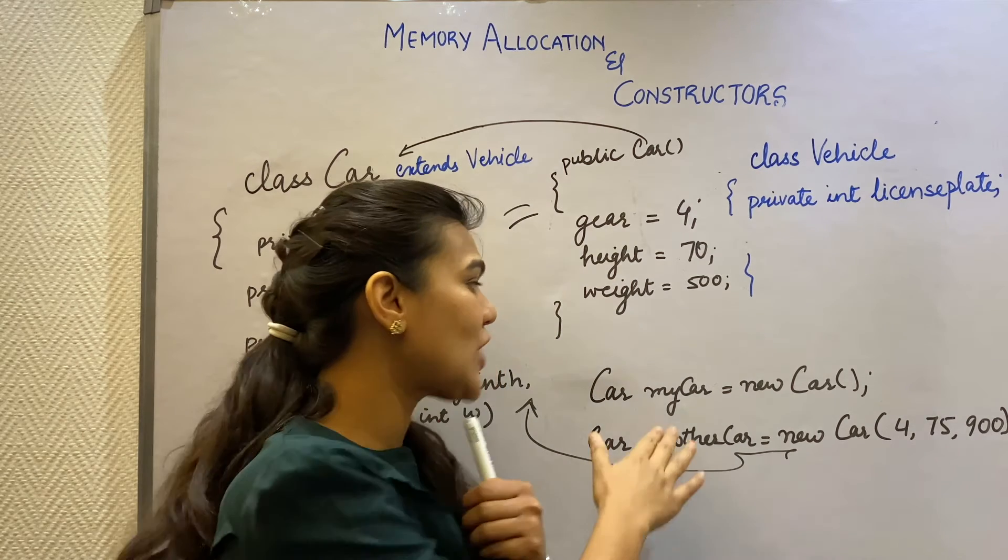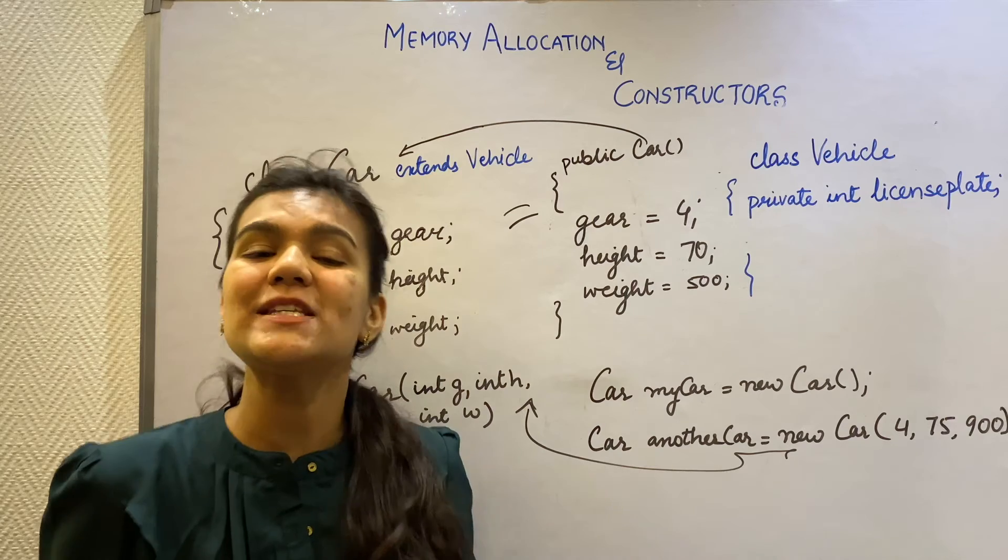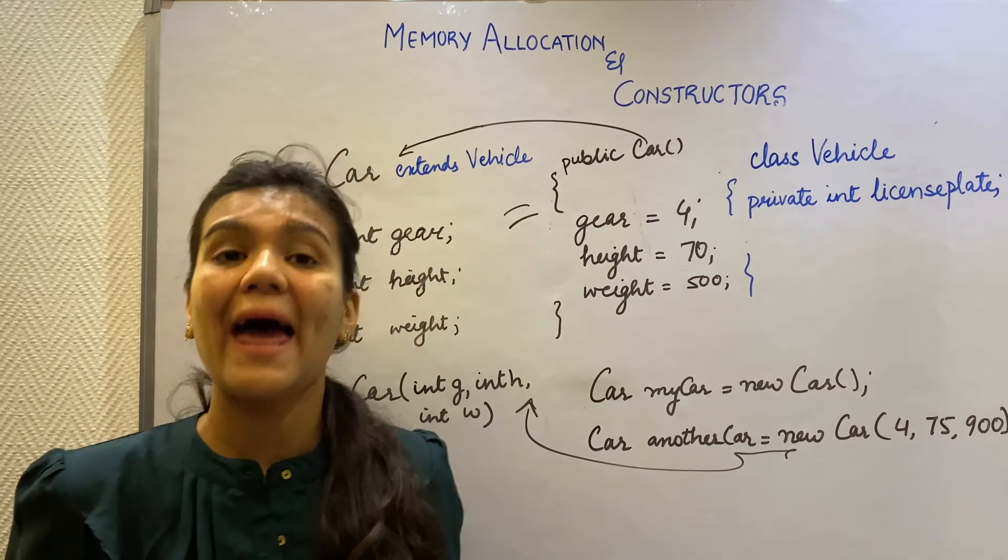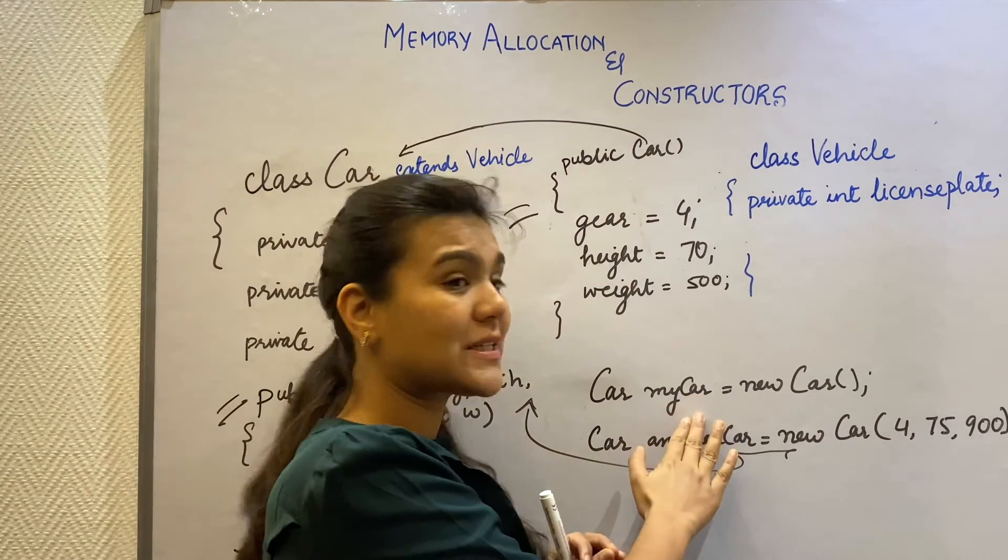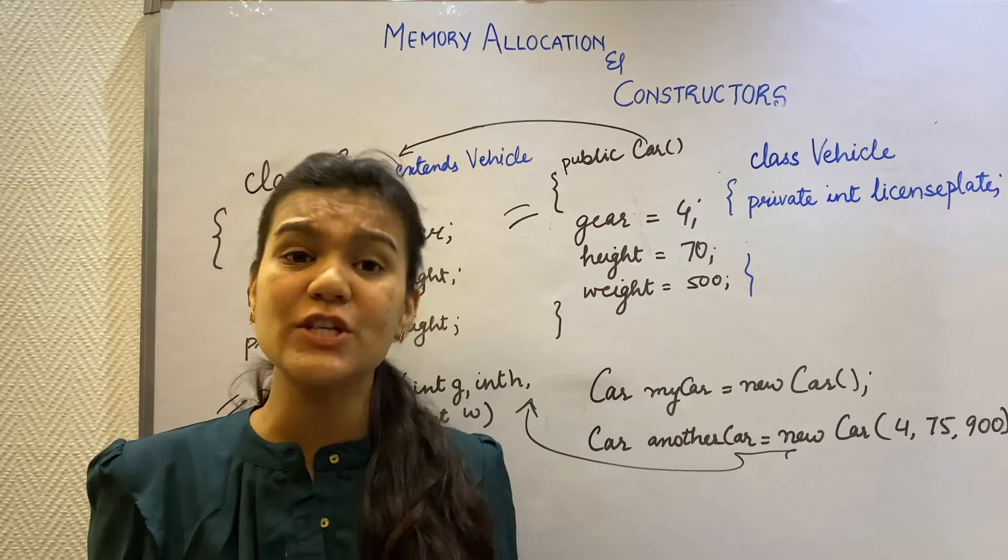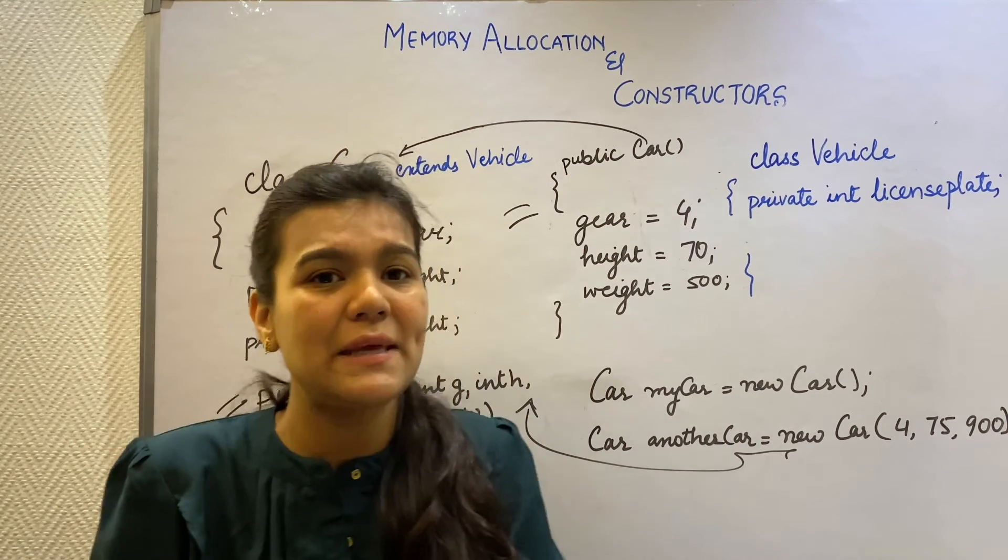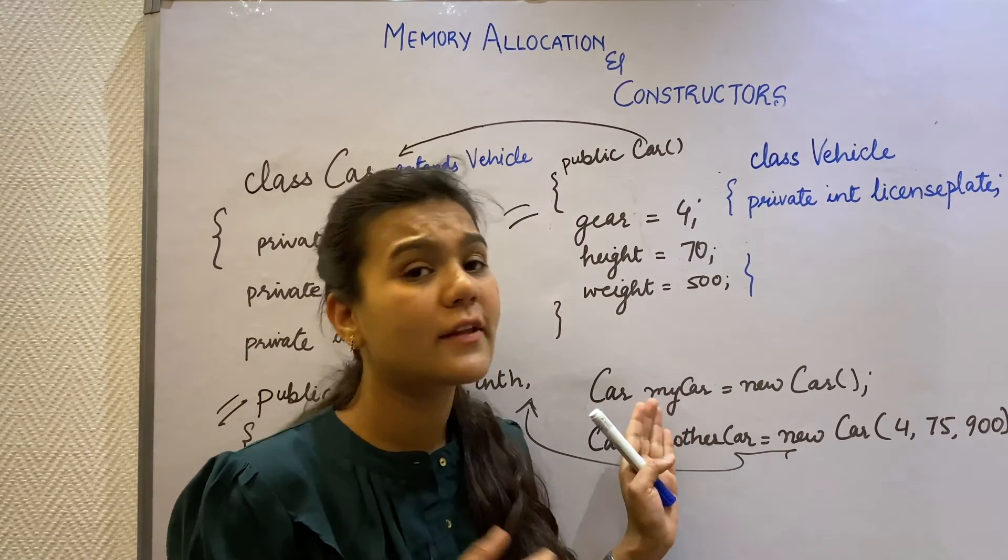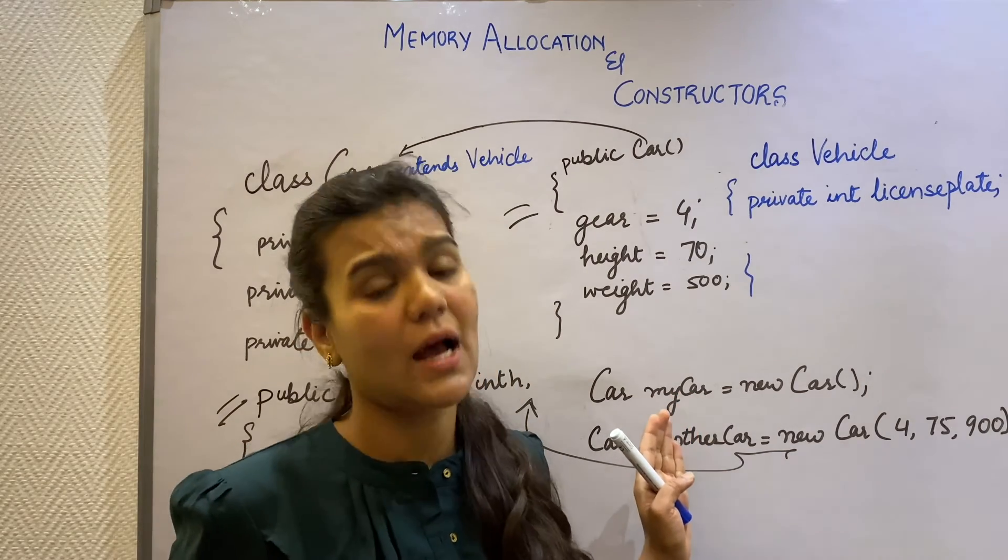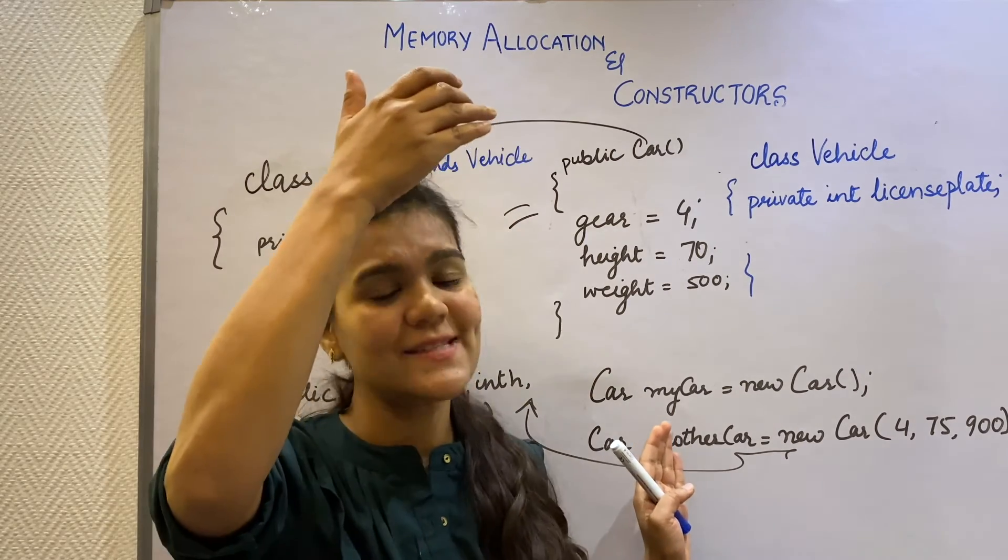So when I create a child class object, it has to get space for its own variables and also its parent class variables. And we understood that when an object is created, every time a constructor gets called and each class has a constructor. So if I combine these two points, that means when a child class object gets created, the constructor of its class runs along with its parent class constructor up to the inheritance hierarchy.